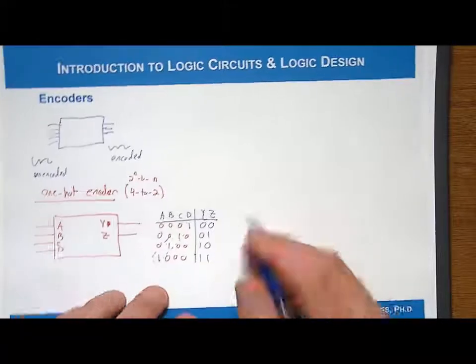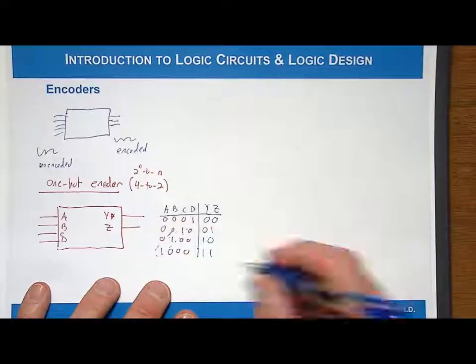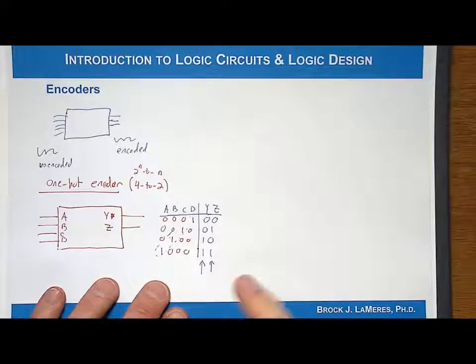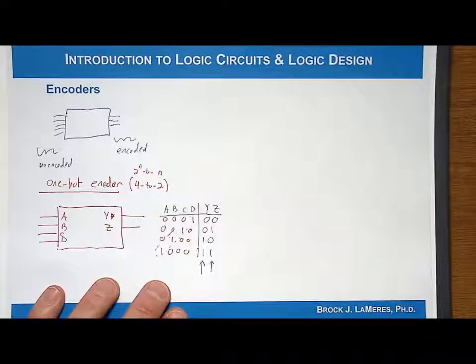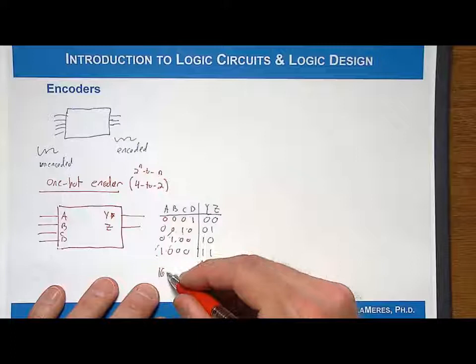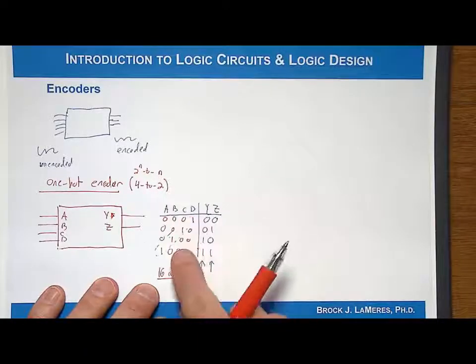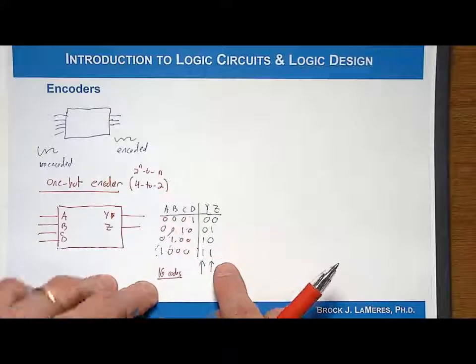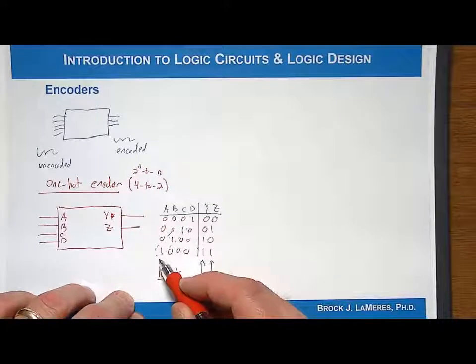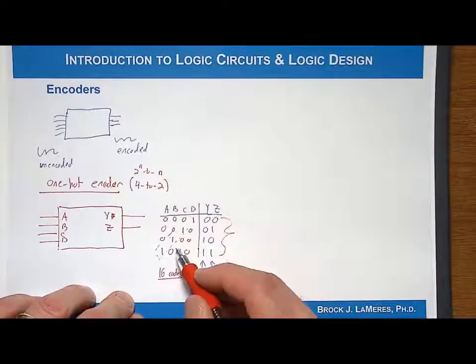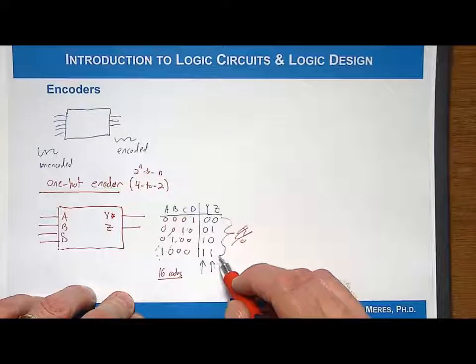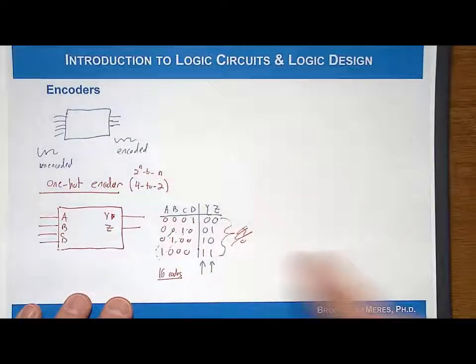Now we can create a circuit to implement this using the classical digital design approach. We'll create a logic expression for each bit of the output because a logic expression only produces a scalar output. One expression for Y and another for Z. What's interesting is we have 4 inputs which can produce up to 16 unique codes. However, for an encoder only a few codes are specified. We can take advantage of don't cares, saying we'll only respond with these values for these 4 input codes. For any other codes, we don't care what the output is.